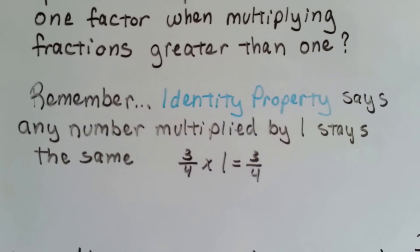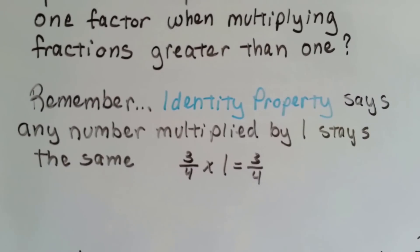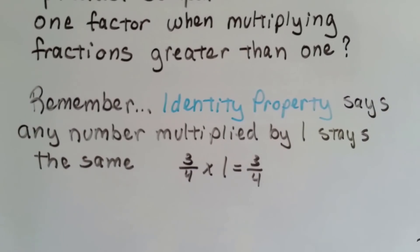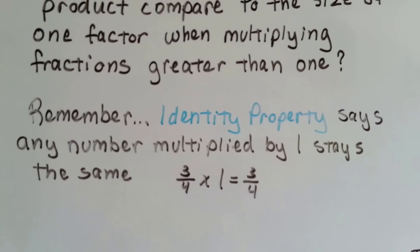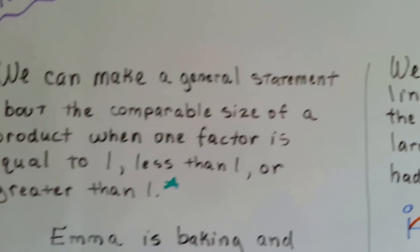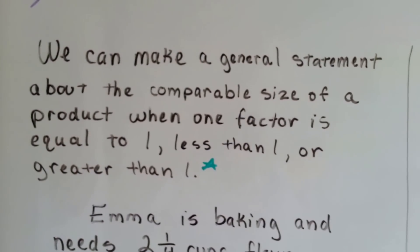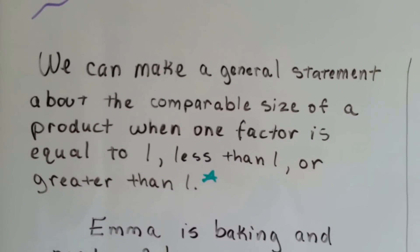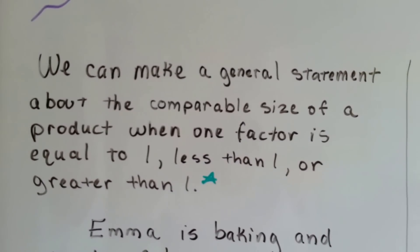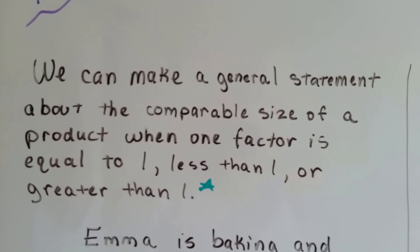Just remember, the identity property says any number multiplied by 1 stays the same. 3 fourths times 1 equals 3 fourths — remember that from fourth grade? We can make a general statement about the comparable size of a product when one factor is equal to 1, less than 1, or greater than 1.